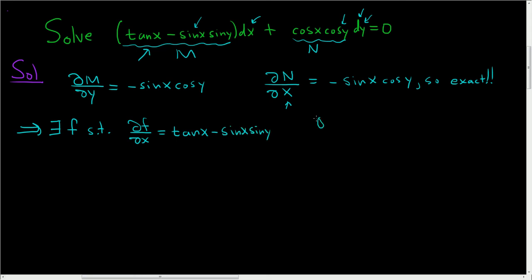And the first partial derivative of F with respect to Y is equal to this thing here. So this is cosine X and cosine Y.